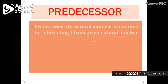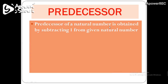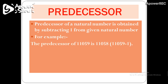The next term is predecessor. The predecessor of a natural number is obtained by subtracting 1 from the given natural number. So the predecessor of 11,059 is 11,058, which is obtained by subtracting 1 from 11,059.